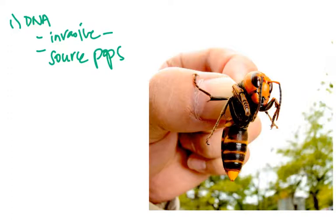You would also want to get a DNA sample from potential source populations. So this is an Asian giant hornet. So you would want to get samples from different populations in Asia.